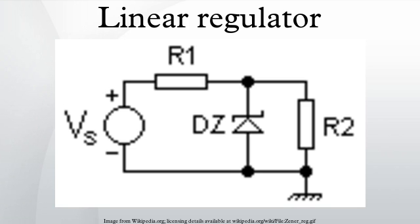The simple shunt regulator operates by way of the Zener diode's action of maintaining a constant voltage across itself when the current through it is sufficient to take it into the Zener breakdown region. The resistor R1 supplies the Zener current as well as the load current IR2. R1 can be calculated where Vz is the Zener voltage and IR2 is the required load current. This regulator is used for very simple low-power applications where the currents involved are very small and the load is permanently connected across the Zener diode.